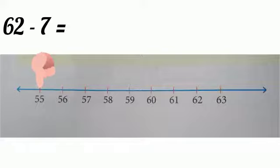Where did we reach? Yes, 55. So, we can say the answer of 62 minus 7 is 55.